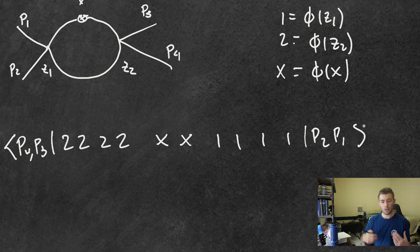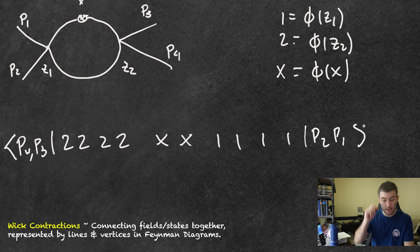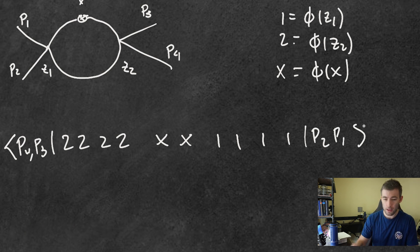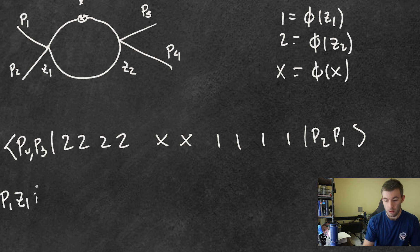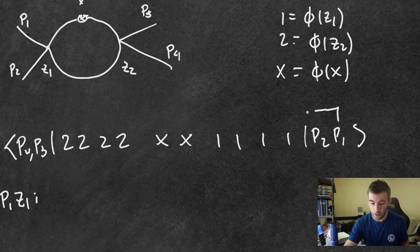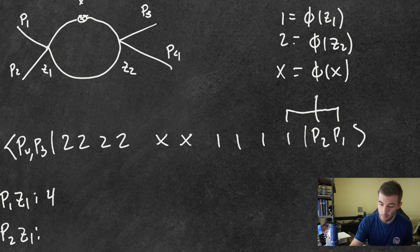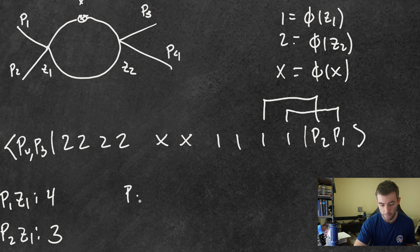There's two, two, two, two at x, and one, one, one, one at p₂, p₁. One way to form the Wick contractions: if I want to contract p₁ with z₁, I have four copies of z₁ to do that with — a combinatoric factor of four. Then p₂ to z₁ leaves three remaining options. We do the same thing for p₄ and z₂, and p₃ and z₂.